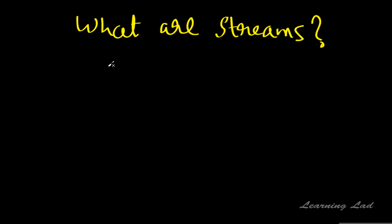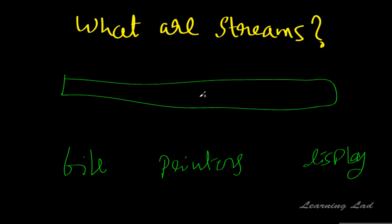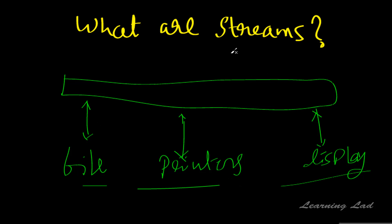The next thing is what is the use of streams. In your program, sometimes we have to read or write from or to a file, so we need to work with files. Sometimes we need to write to printers, and sometimes we have to work with other kinds of devices such as display devices or terminals. The iOS system is going to link these streams with the devices — discs, printers, and displays — and perform the read or write operations we want to perform.